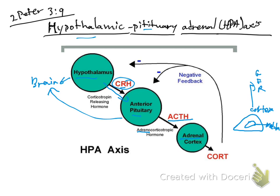The cortex has three layers, and it's important to remember them. They are the zona glomerulosa, zona fasciculata, and zona reticularis. A useful mnemonic is GFR — but don't confuse this with GFR in the kidney, which stands for glomerular filtration rate. In the adrenal cortex, GFR stands for glomerulosa, fasciculata, and reticularis. Each of these layers secretes different hormones.